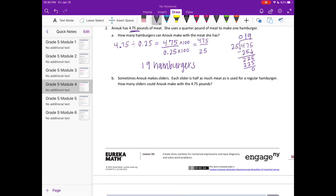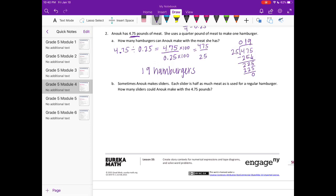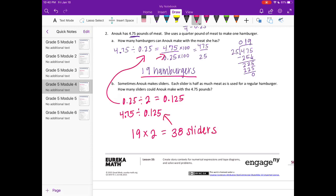Part b: Anouk sometimes makes sliders. Each slider is half as much meat as is used for regular hamburgers. How many sliders could Anouk make with four and seventy five hundredths pounds? There's multiple ways to do this. We could either find out what half of twenty five hundredths is and find that that's one hundred twenty five thousandths, then do the four and seventy five hundredths divided by one hundred twenty five thousandths and do the same strategy. Or I notice that if it's half as much, that means it's going to make twice as much, so I'm just going to do 19 times 2 equals 38. So it could make 38 sliders.